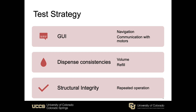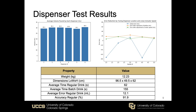This involves using the motors to dispense shots from each dispenser to check for inconsistencies. We need to make sure the shots are consistent in volume and that the reservoir refills after each dispense. Lastly, we need to test that the machine can be run repeatedly without breaking — checking for unwanted friction, the arm hitting itself, or any leaky dispensers.